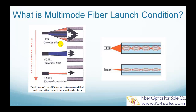The problem with LEDs is that they cannot be turned on and off fast enough, so they are replaced by Vixel lasers as fiber systems speed up from 100 Mbps to 1000 Mbps and 10 Gbps. Vixel lasers have a much smaller emitting angle and smaller area than LEDs, so Vixel lasers launch into only a portion of the modes that a multi-mode fiber can carry, mostly located near the center of the core. This launch condition is called underfilled launch, as shown in the second picture.